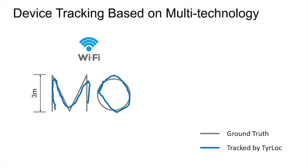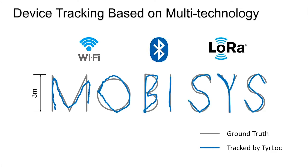TyrLoc is a low-cost platform that can provide localization service based on Wi-Fi, Bluetooth Low Energy, and LoRa.